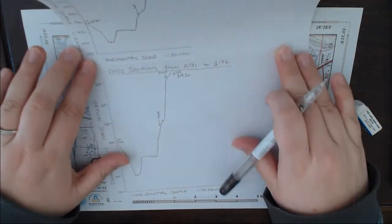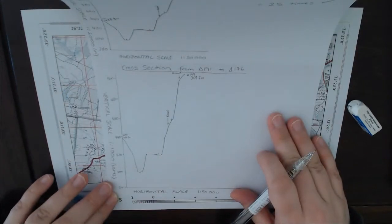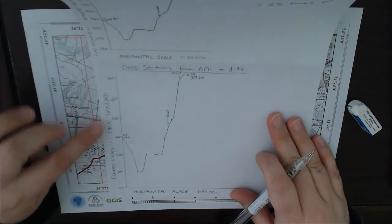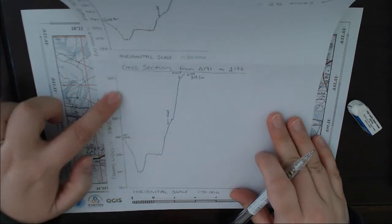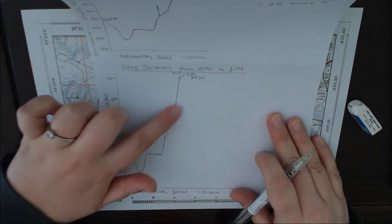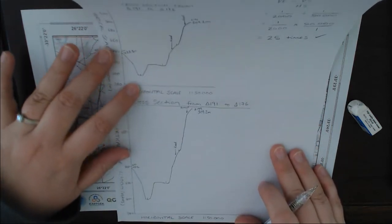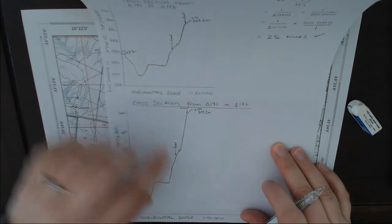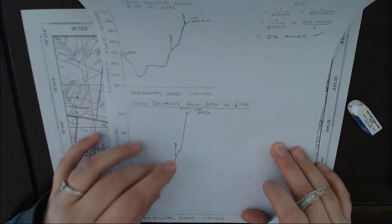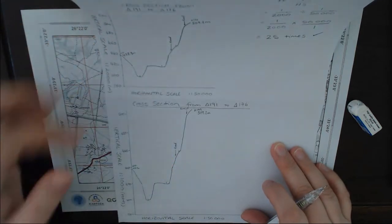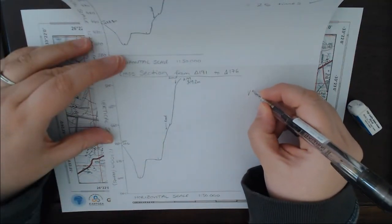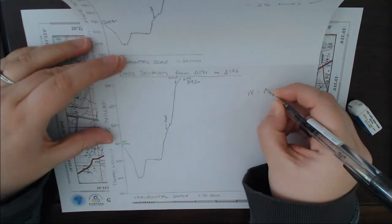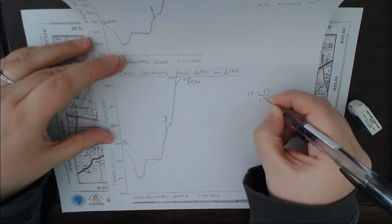I'm going to do a different example. So I took the same data, I made a second cross-section, but I changed the vertical scale. So instead of 1 is to 2,000, it is now 1 is to 1,000. Because I've made it that 2 centimeters is equal to 20 meters in altitude. So it is stretched out. That means we are going to have a different vertical exaggeration.